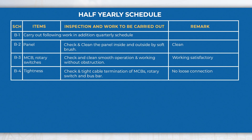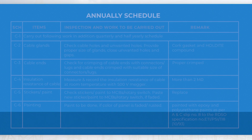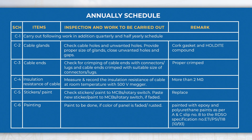In the half-yearly schedule, perform activities like checking and tightening all cable terminations, etc., in addition to quarterly schedule activities. In the annually schedule, perform activities like measuring the insulation resistance value of cable and checking of cable, etc., in addition to half-yearly and quarterly schedule activities.